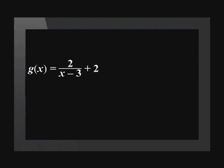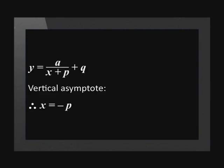To find the vertical asymptote of g(x), we need to make the denominator of the equation equal to 0. This gives us x - 3 = 0. Therefore, the vertical asymptote has an equation of x = 3. This means that we can always find the vertical asymptote using the formula x = -p.